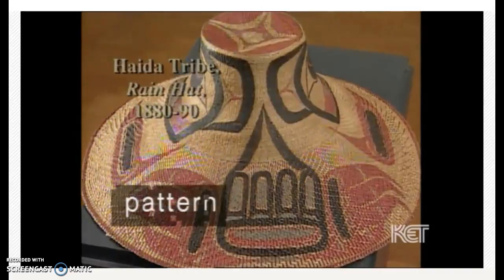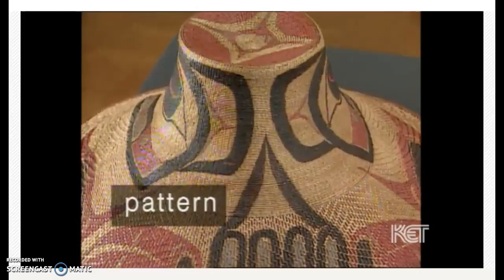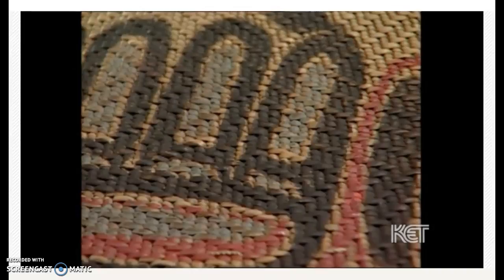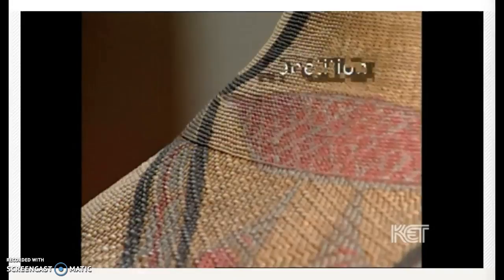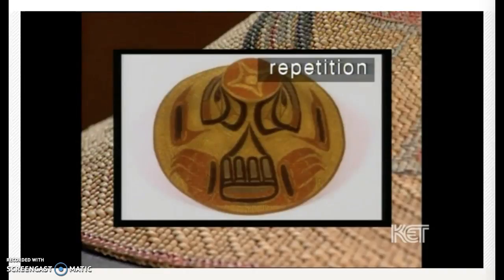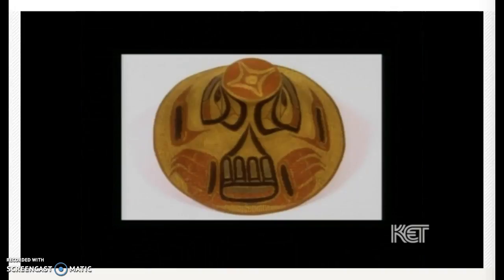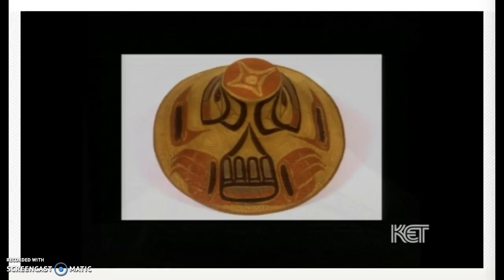When an artist repeats an element such as color, line, or shape, that design element is called pattern. This rain hat was made by members of the Native American Haida tribe off the coast of British Columbia. They used dramatic patterns of red and black. These skilled artisans borrowed open organic shapes and rhythmic lines from nature. The repetition gives a sense of balance, and the pattern is repeated on all sides of the hat for a graceful ornamental effect. Repeating these symbolic patterns helped establish a cultural identity for the Haida people and made their distinctive woven wares appealing to American and European traders.